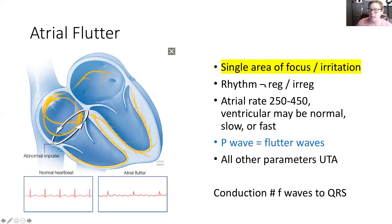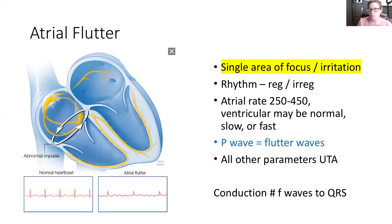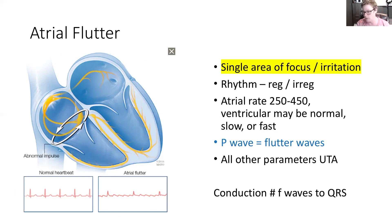So the rhythm can be regular or irregular. The atrial rate is 250 to 450 beats per minute. The ventricular rate should be normal, but it can also be slower or faster depending on the conduction rate — that is, how many atrial flutter waves to QRS waves.